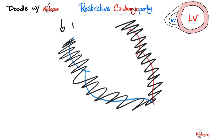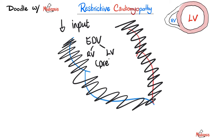So there is less input to the heart, which means the end-diastolic volume — whether right ventricular or left ventricular, which is the preload — decreases. There is less input. If there is less input, what happens to cardiac output? It decreases. This is true for both the right and left sides of the heart.